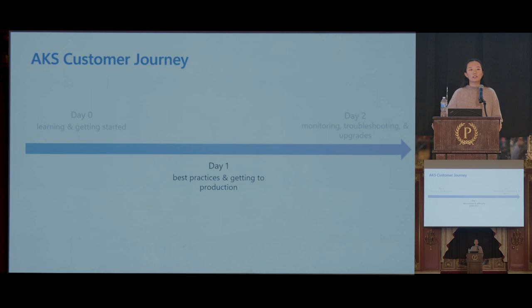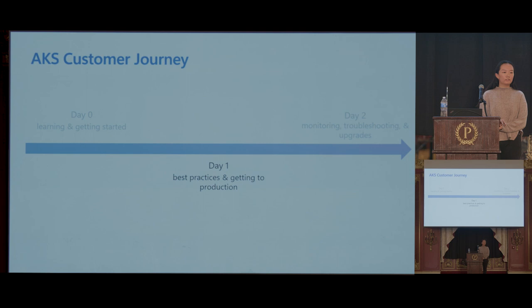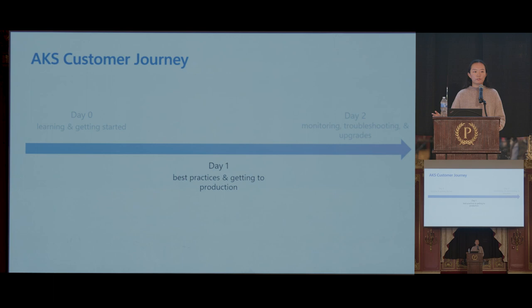The next scenario is around day one: after doing some simple testing, how do we understand all the best practices for our AKS clusters and get our workloads ready for production? A question came up: I mentioned the AI returns up-to-date information — the question was about the GPT knowledge cutoff around 2021. We are aware of that, and since 2021, we're basically manually updating all of the information from our Azure docs to fill in that gap.